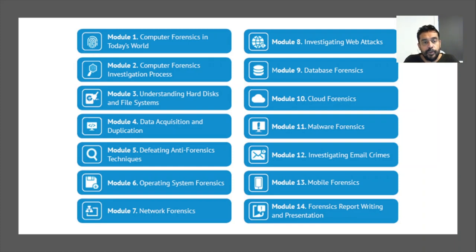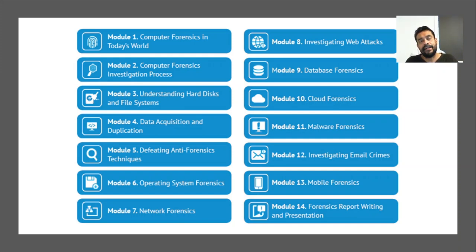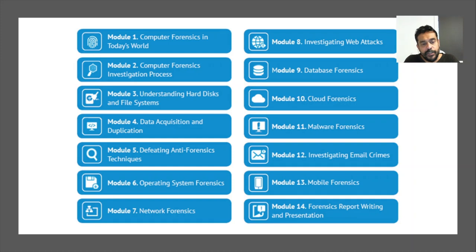Module 3 covers hard disks and file types. There are various types of hard disks — HDDs (spinning disks) and solid-state drives — and we will discuss multiple file systems including FAT, FAT12, FAT16, FAT32, NTFS, HFS, and optical device file systems, which is important for data recovery. Module 4 covers data acquisition and duplication. We do not use original digital evidence for analysis to avoid tampering, so we create multiple copies and use those for investigation.